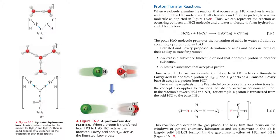Bronsted and Lowry proposed definitions of acids and bases in terms of their ability to transfer protons. An acid is a substance — a molecule or an ion — that donates a proton to another substance. A base is a substance that accepts a proton. Thus, when hydrochloric acid dissolves in water (equation 16.3), it acts as a Bronsted-Lowry acid — it donates a proton to water — and water acts as a Bronsted-Lowry base, accepting a proton from hydrochloric acid. Because the emphasis in the Bronsted-Lowry concept is on proton transfer, the concept also applies to reactions that do not occur in aqueous solution. In the gas-phase reaction between hydrochloric acid and ammonia, a proton is transferred from HCl to NH3. The hazy film that forms on lab windows and glassware is largely the ammonium chloride formed by this gas-phase reaction.